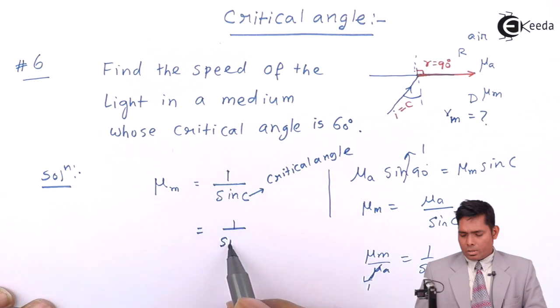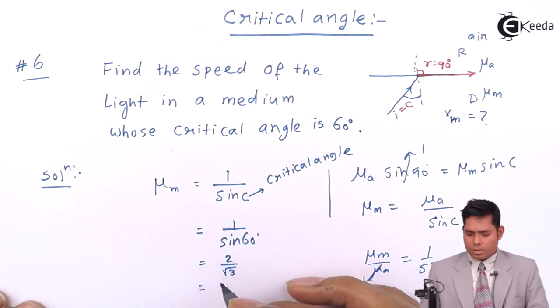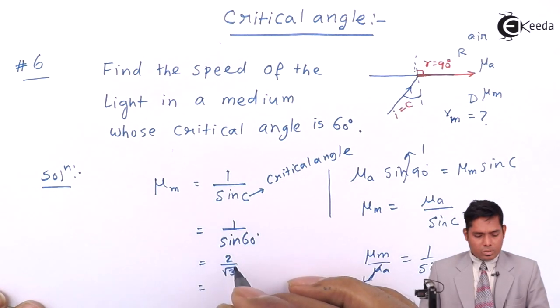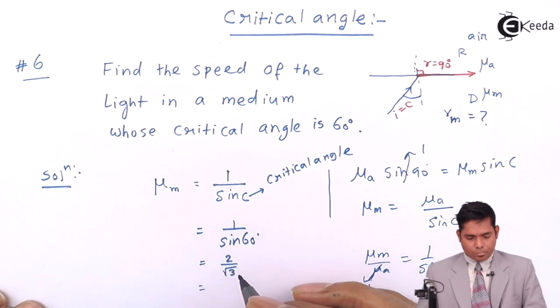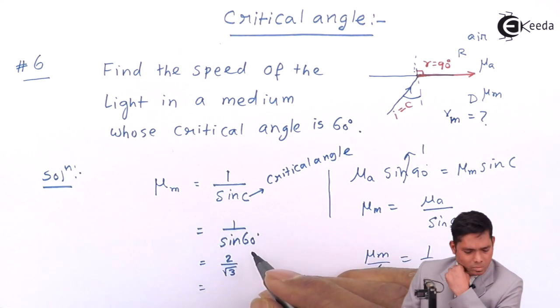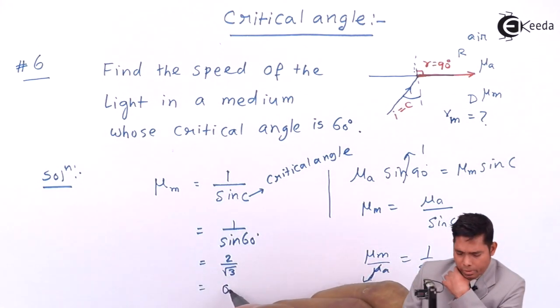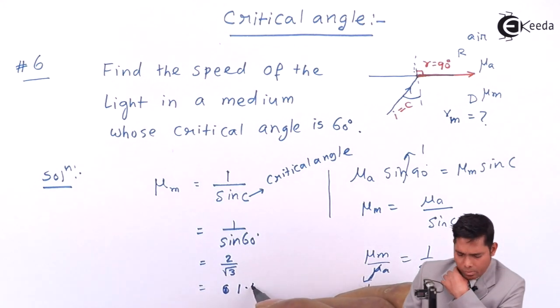Now, this is given as 60. So if I put 60, sine 60 is root 3 by 2, so 2 by root 3. This is 0.866 something. So this is your mu value. That's the answer. This comes out to be sine 60 is root 3 by 2.